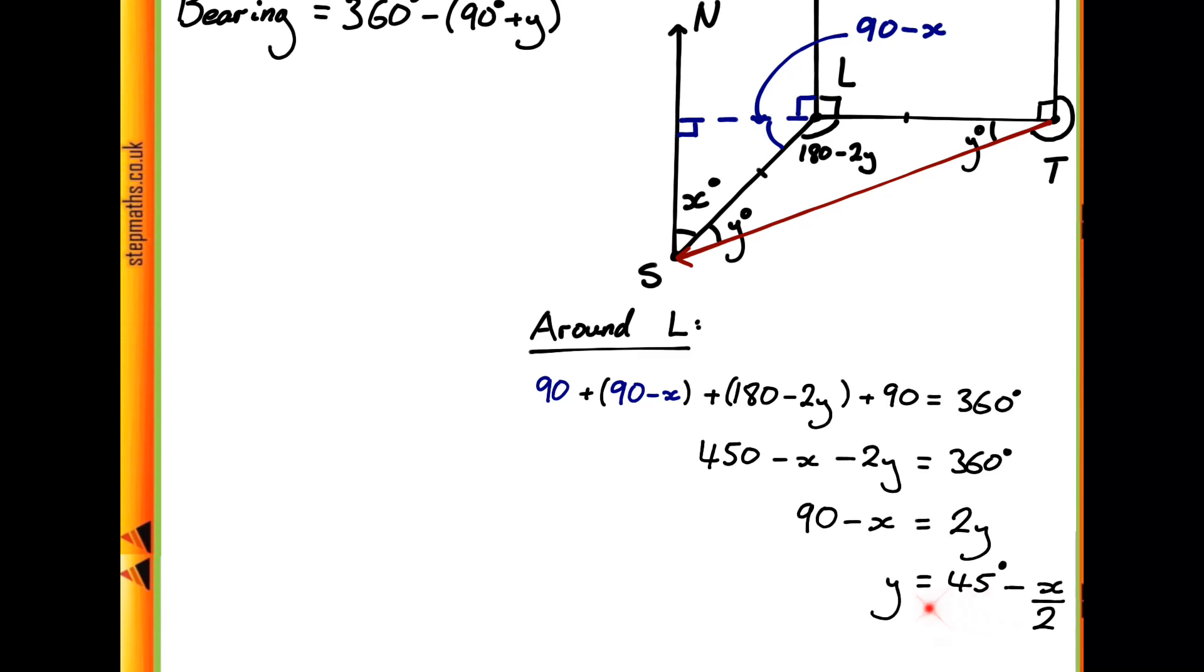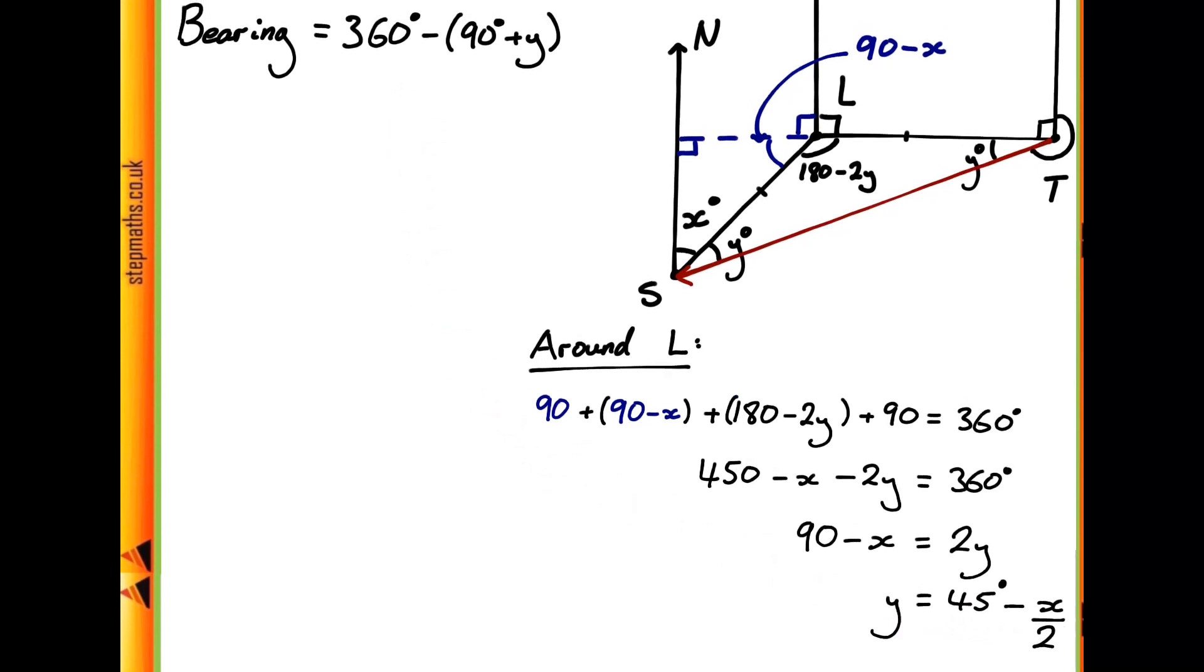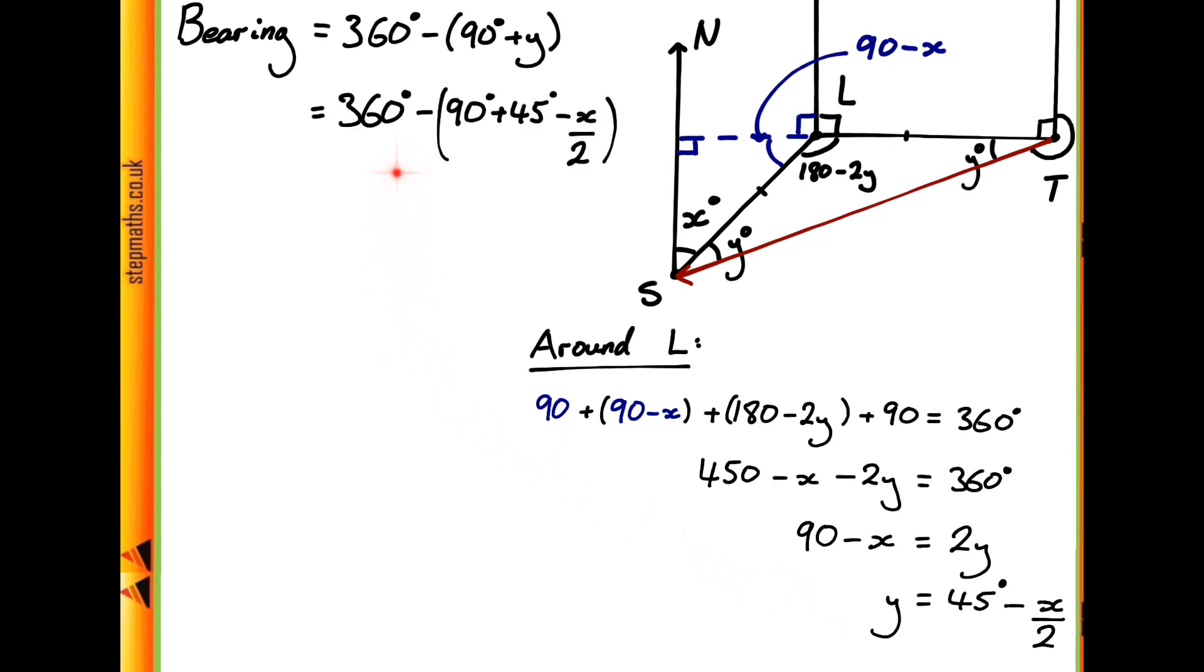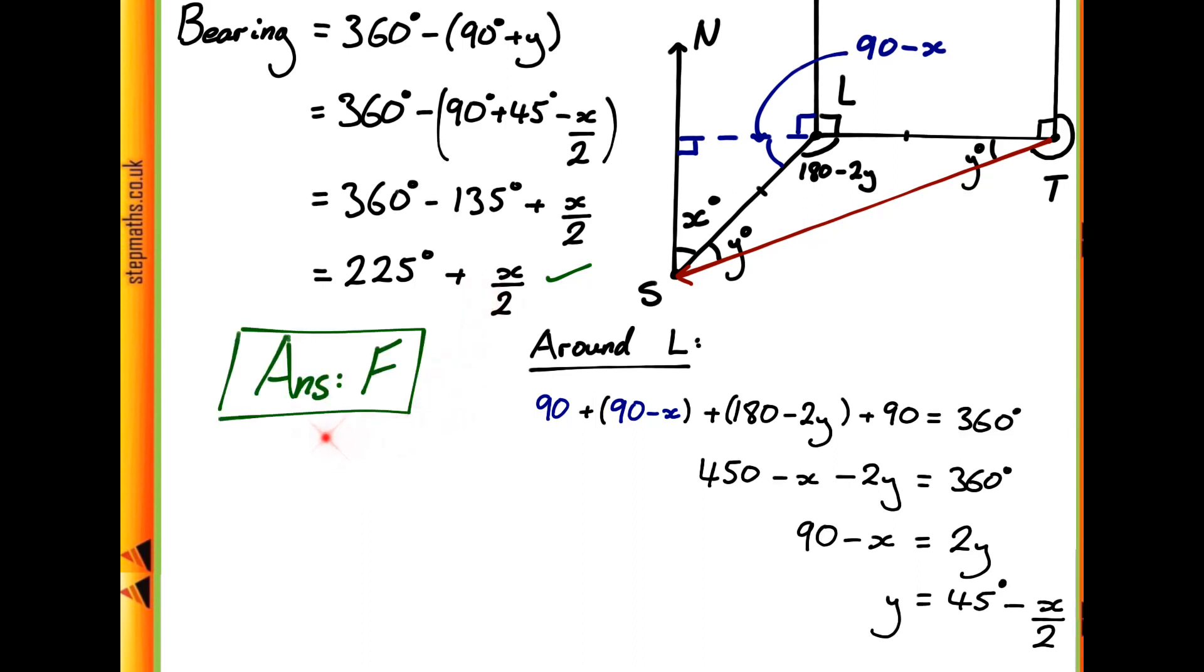So with this expression we can substitute this into our expression for the bearing and if we do that then we get our bearing being 360 degrees take away our 90 degrees plus our expression for y 45 minus x over 2. So adding these out, the 90 and 45 together, this becomes 360 take away our 135 and then the minus and the minus together make a plus of x over 2. So this all together is just going to equal 225 plus x over 2 which is going to correspond with answer F given in the question.